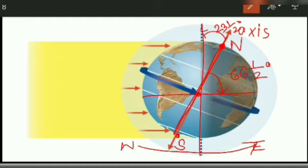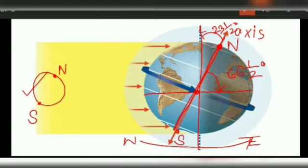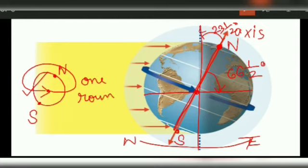This means the earth is in a slightly tilted position. The north pole is here and south pole is here. So if we start from this point, the earth takes 24 hours to complete one round on its own axis.